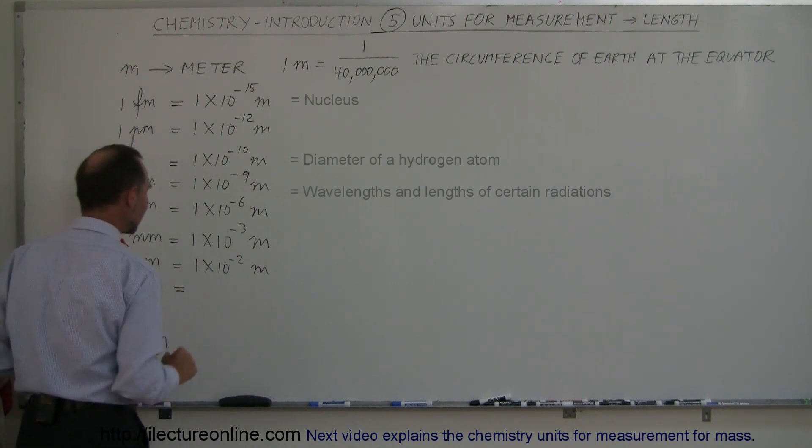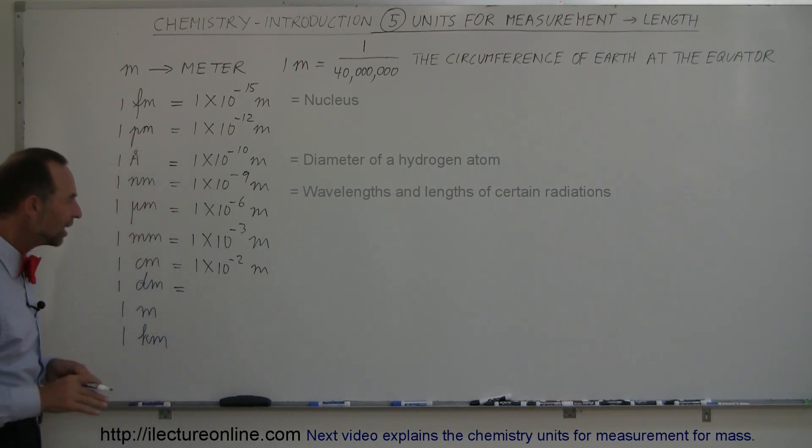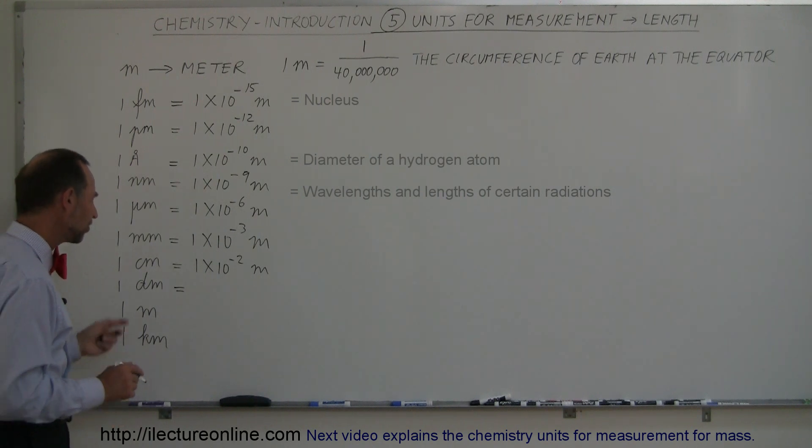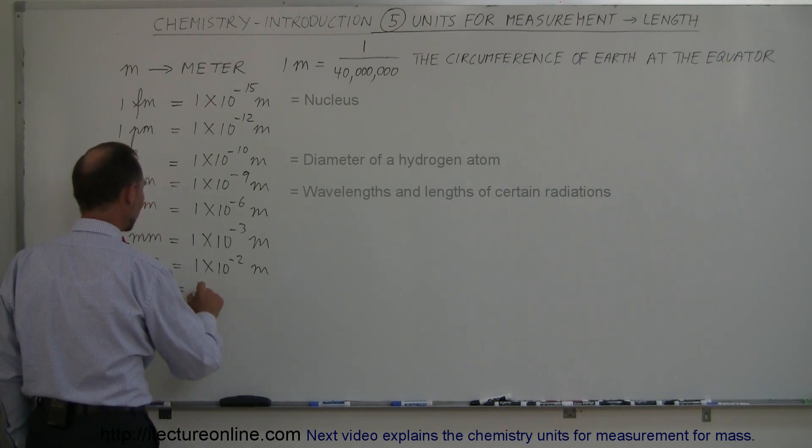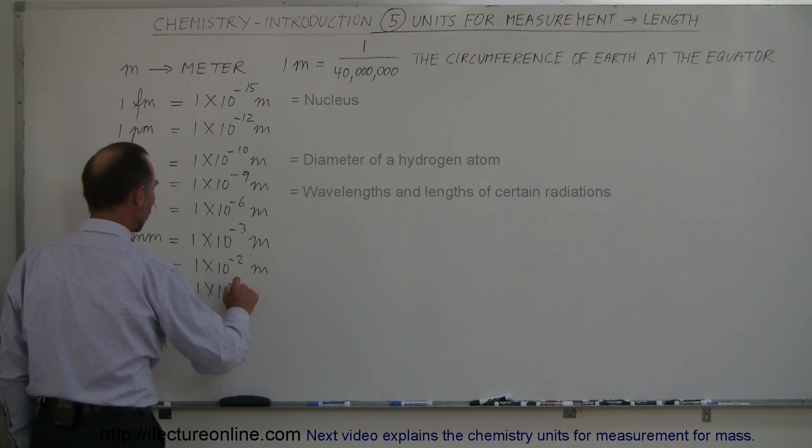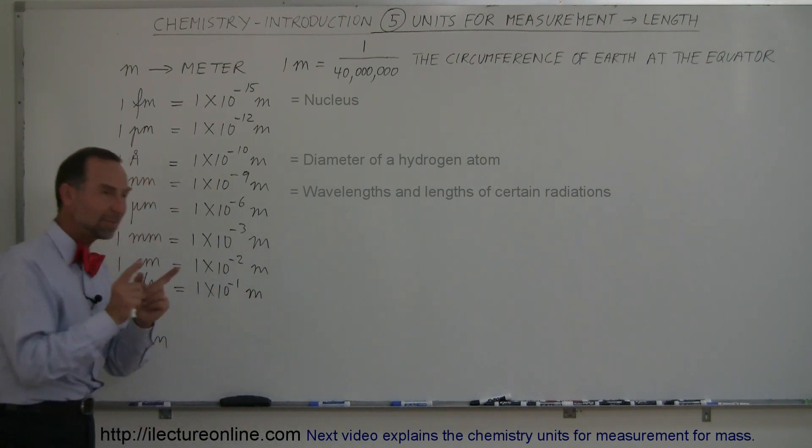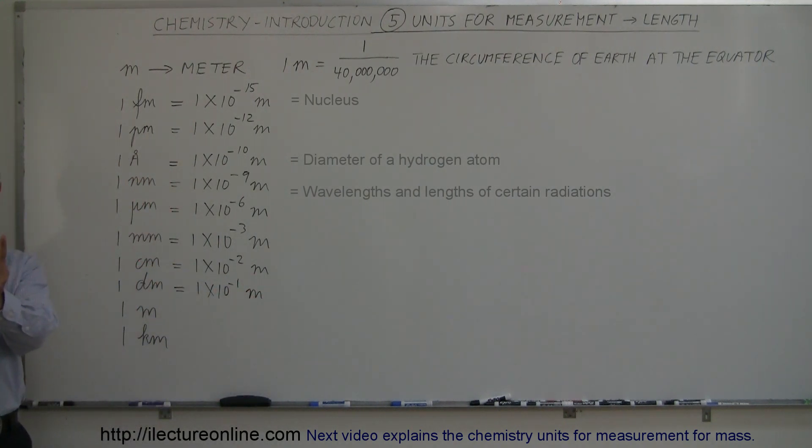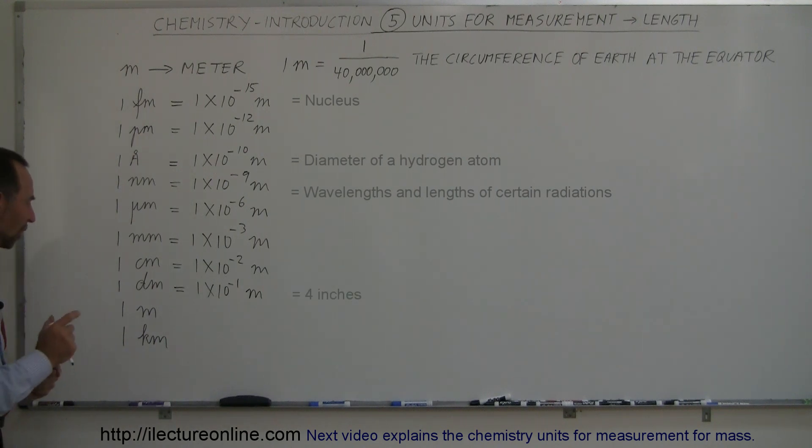A decimeter is something we don't hear very much anywhere in the classroom or in textbooks, but in chemistry, sometimes that is handy to know. It's 1 times 10 to the minus 1 meter. In other words, a decimeter is 1 tenth of a meter, about this long, about 4 inches.